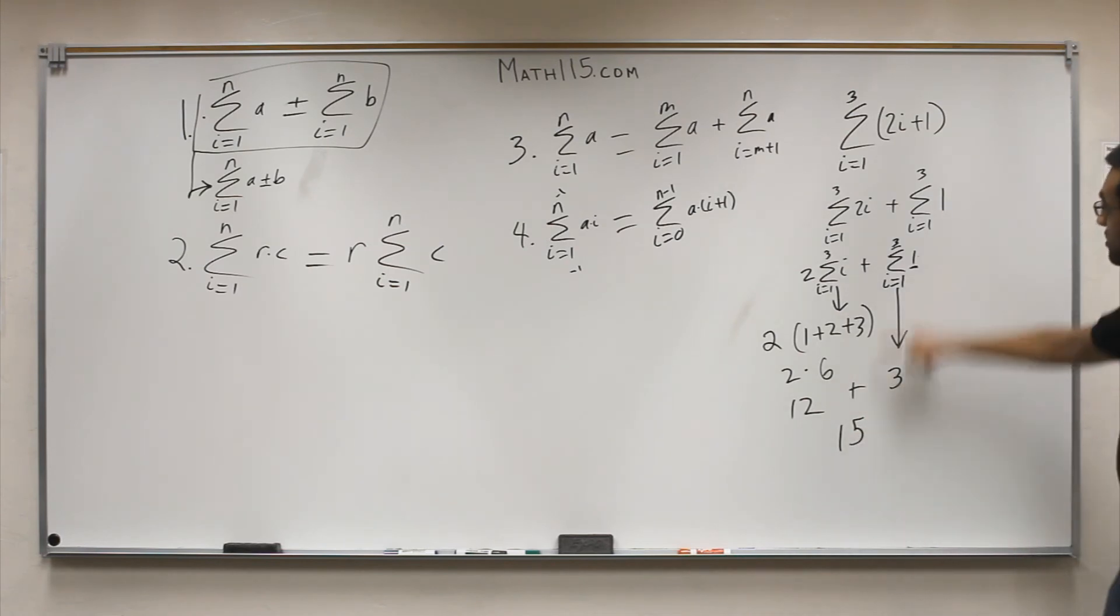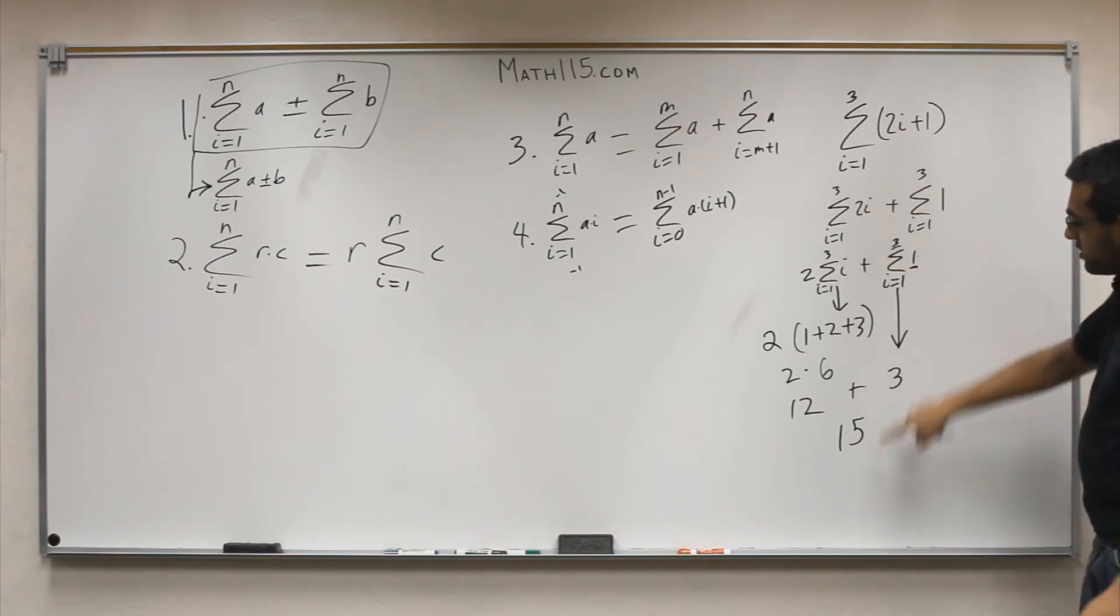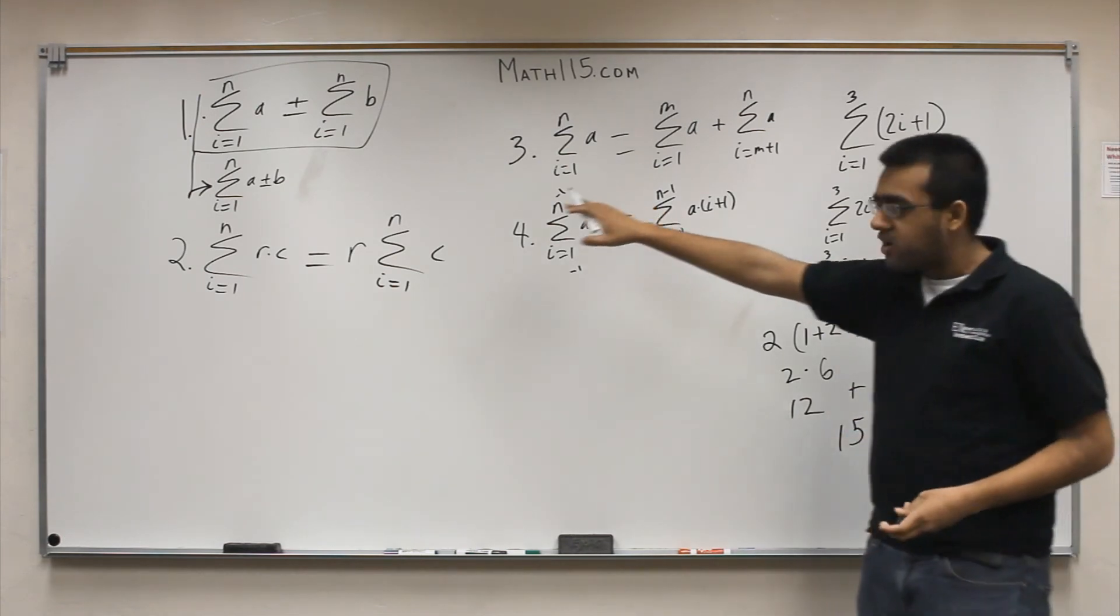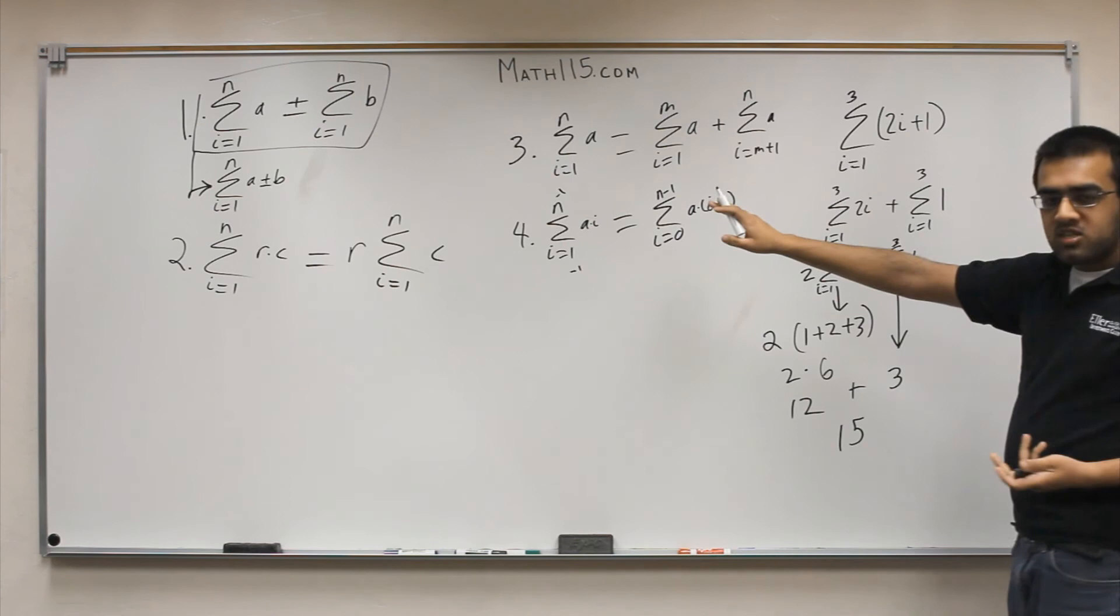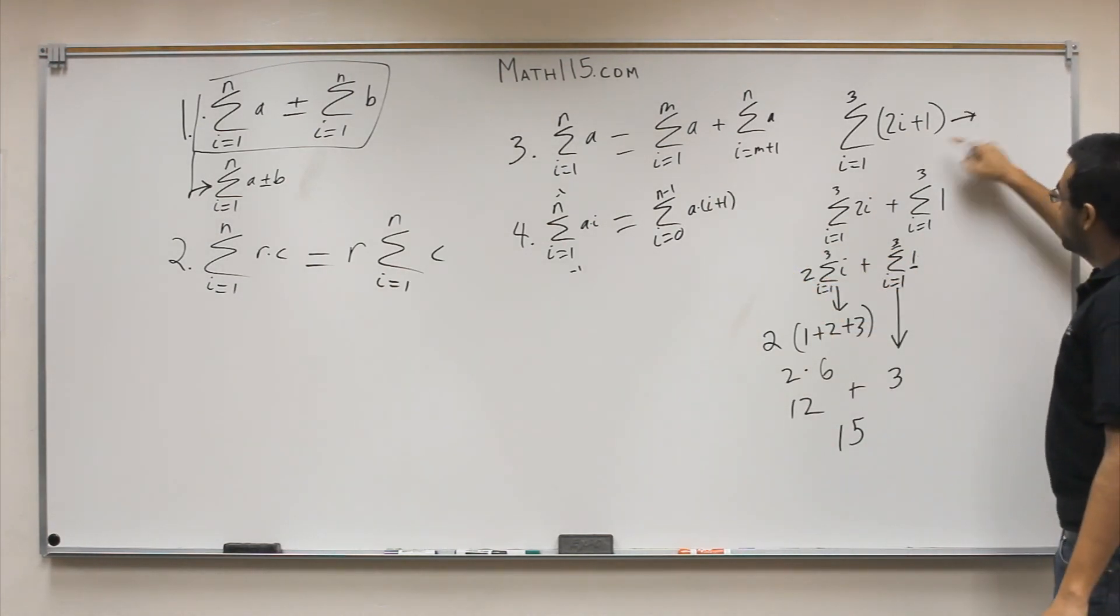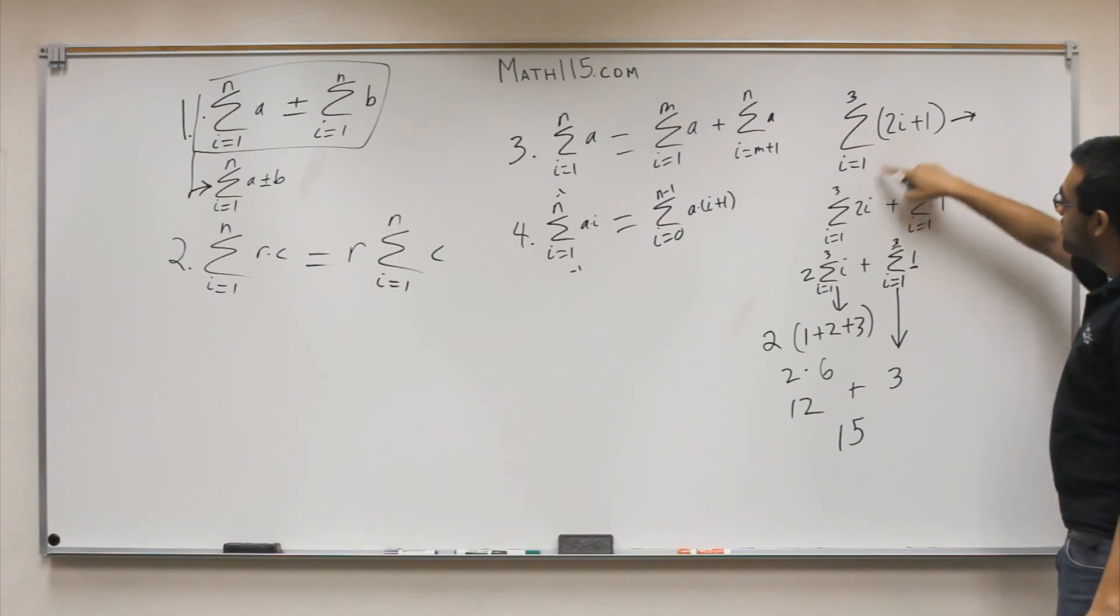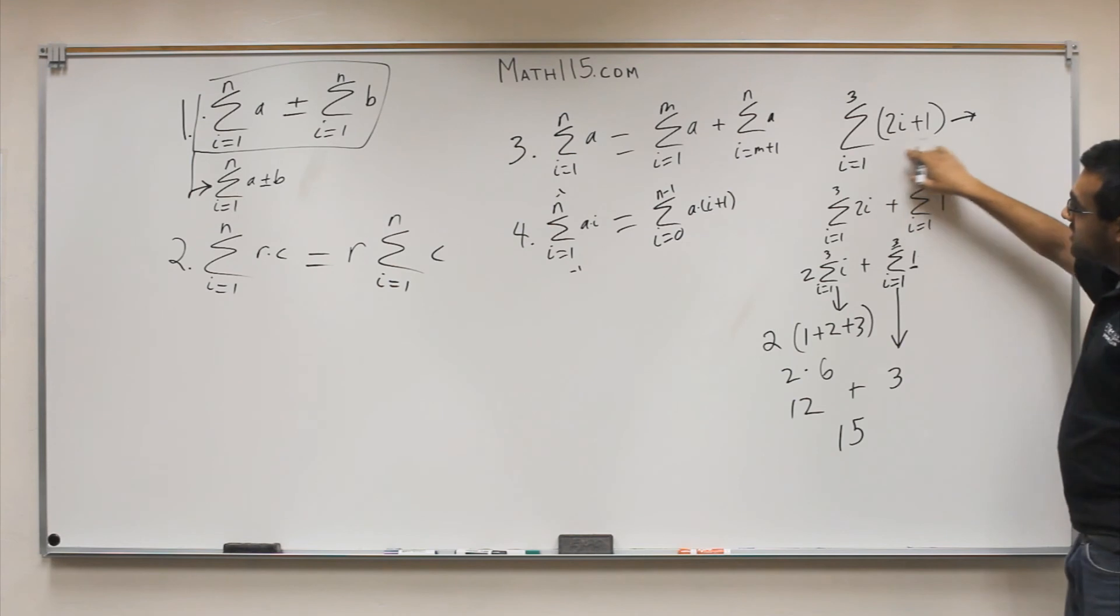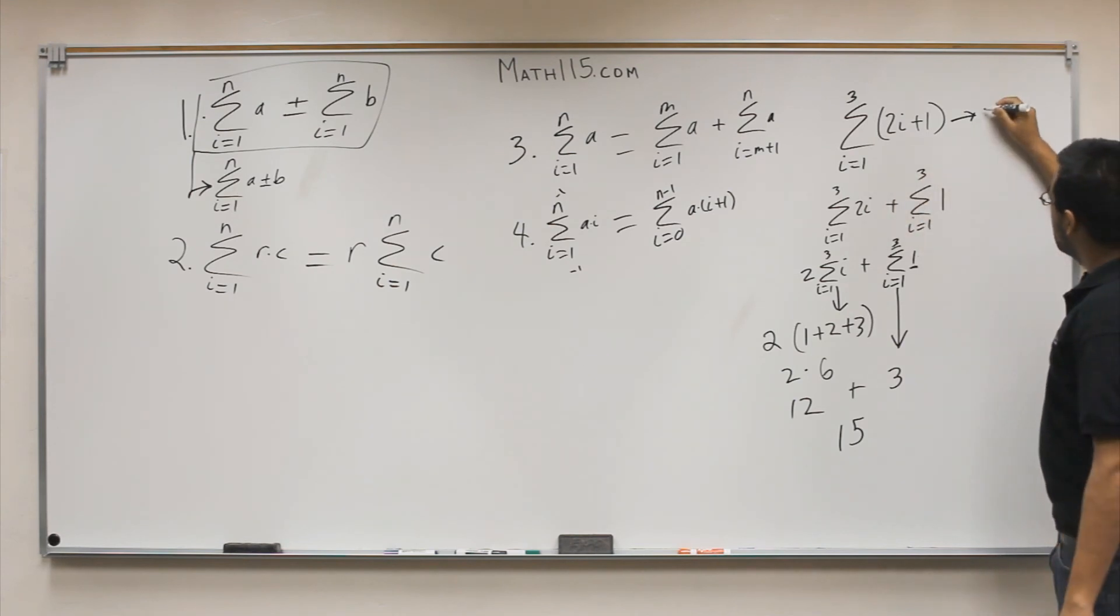The answer to this whole summation is 15. That was the first method, where you use these properties. But let's say you didn't know these properties specifically. Let's say you just wanted to solve this by plugging in 1 into the variable, 2 into the variable, and 3 into the variable.